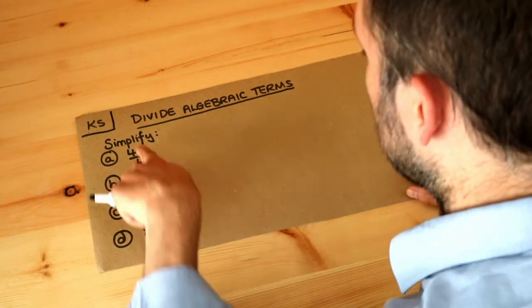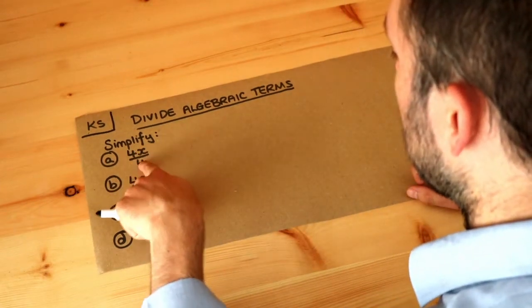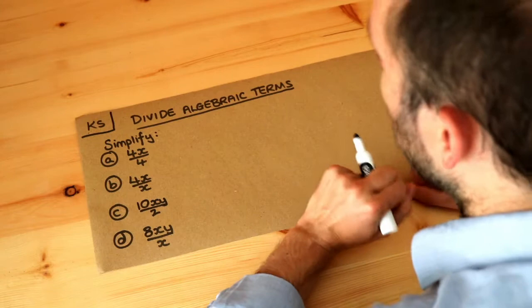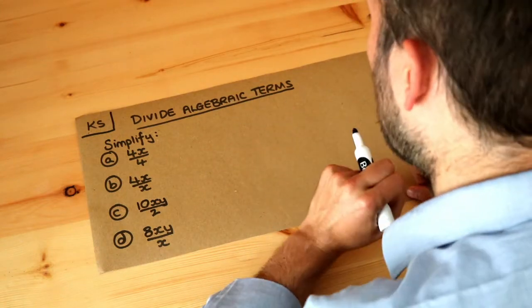In this particular case we're dividing two algebraic terms — something divided by something — and we want to simplify this so it's tidier.